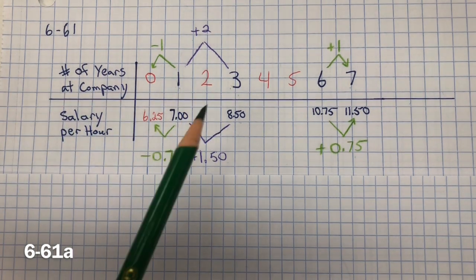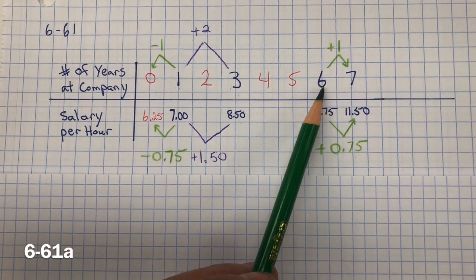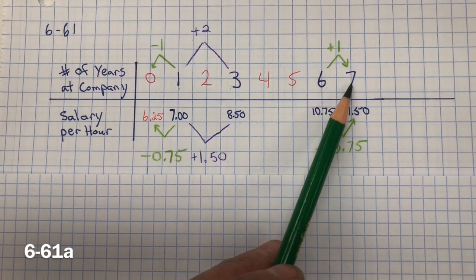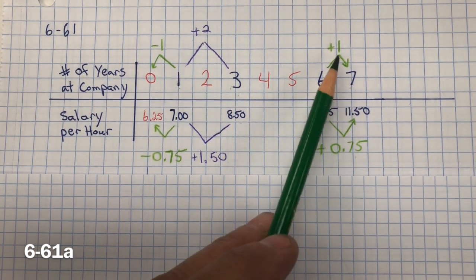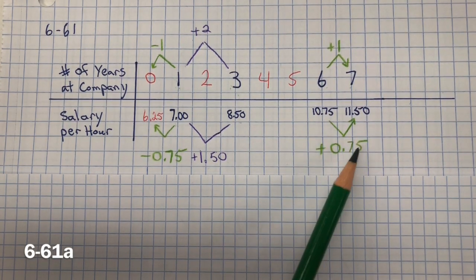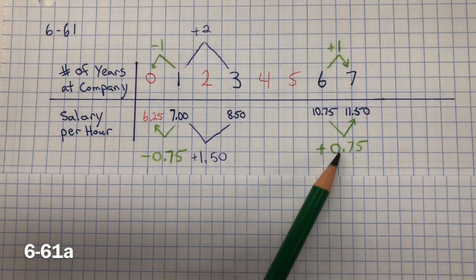So the way I originally saw this was, if I find out how much it increases per year, from 6 years to 7 years, that's 1 year, it's an increase of 75 cents. So I know there's an increase every year of 75 cents.